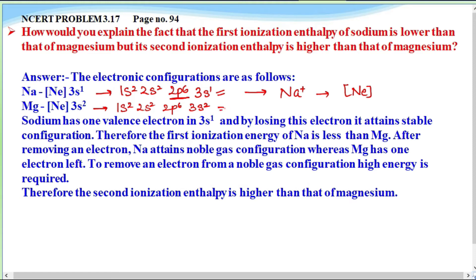In the case of magnesium, when it becomes Mg-positive, the electronic configuration is Ne 3s1. Now if Mg-positive loses one more electron to become Mg2-positive, the ionization energy required is less than that of sodium's second ionization energy.